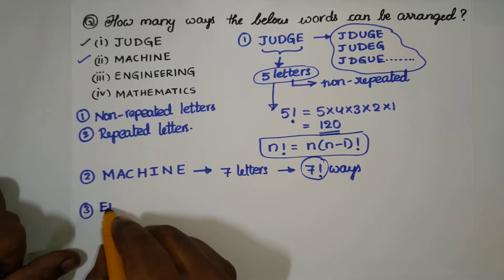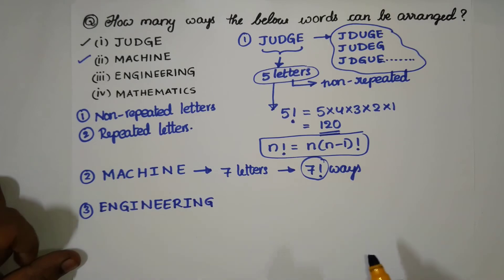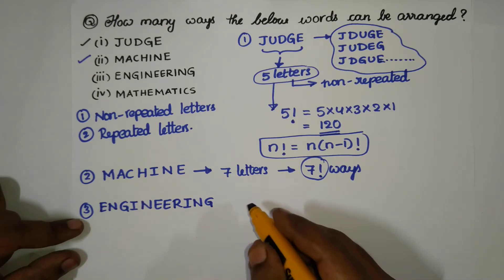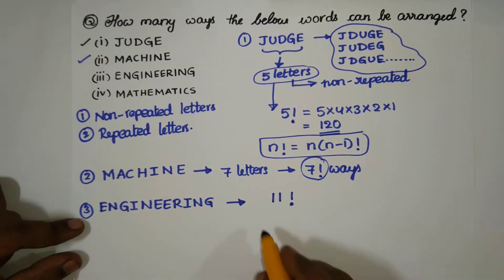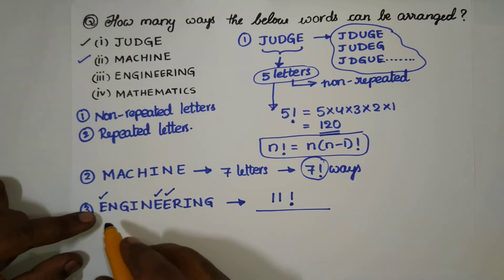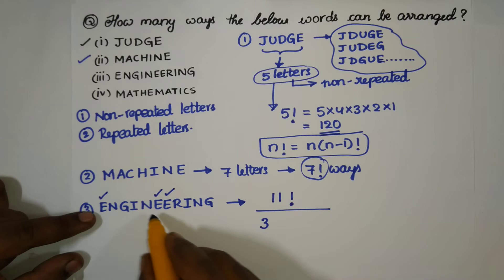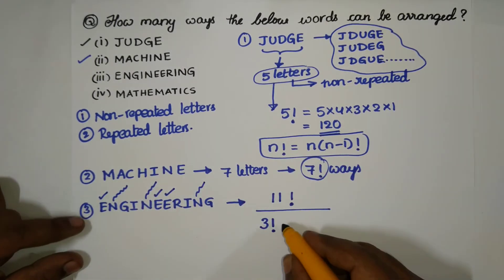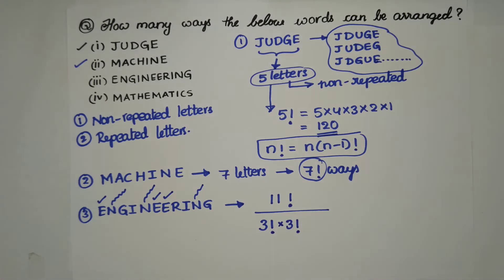Next, the word ENGINEERING: E-N-G-I-N-E-E-R-I-N-G. Counting the letters: one through eleven — we have eleven total letters. So we take 11 factorial in the numerator. Now, in this word the letter E appears three times, so we place 3 factorial in the denominator. Also, there are three N's, so we multiply by another 3 factorial in the denominator.